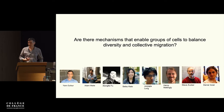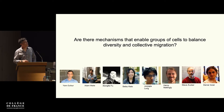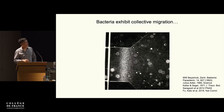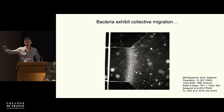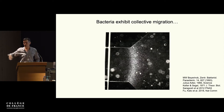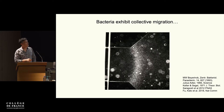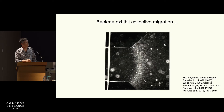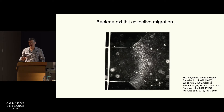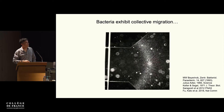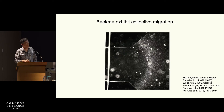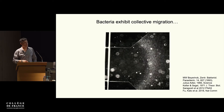Bacteria — E. coli in this case — can migrate collectively. They are eating aspartate: in front of them there's a uniform concentration of aspartate, they consume it, and behind them there's no more aspartate. So between the front and the back of that group there's a gradient that they can sense, and they follow that gradient that they themselves are creating. This has been known for a very long time.